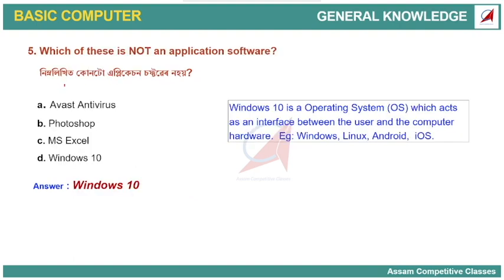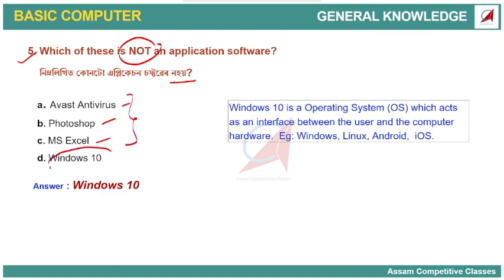Other examples of application software include Avast Antivirus, Photoshop, and MS Excel. However, Windows 10 is not application software — it is an operating system. The operating system is the interface between the user and the computer hardware.